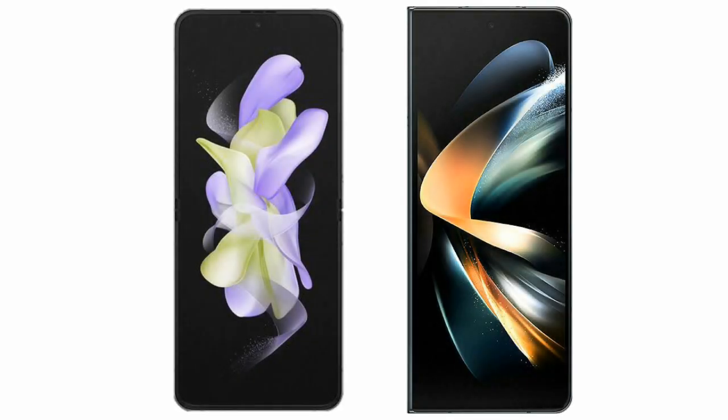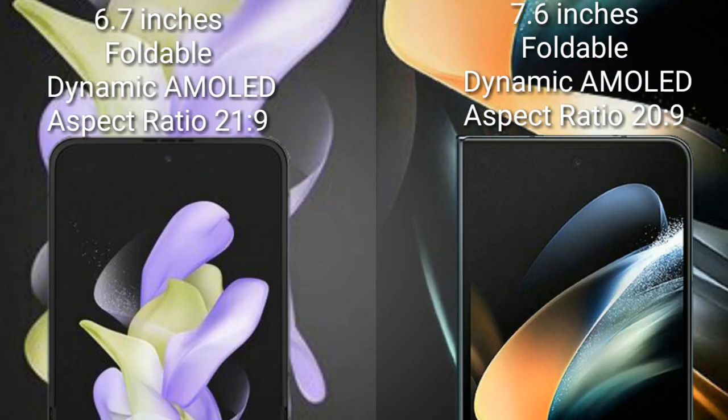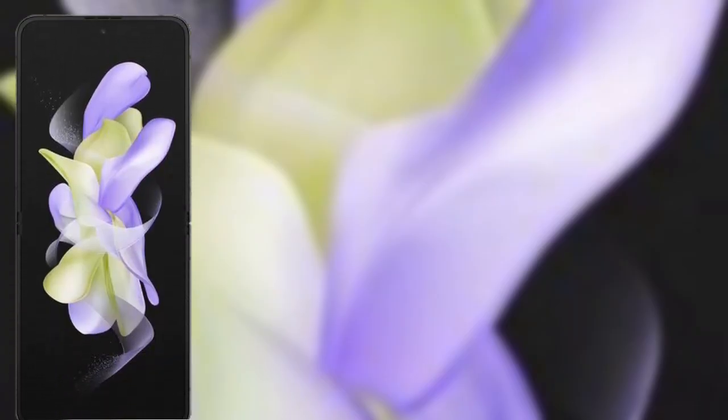I will compare the new Samsung Galaxy Z Flip 5 with Samsung Galaxy Z Fold 4. Samsung Galaxy Z Flip 5 comes with a 6.7-inch Full HD Dynamic AMOLED display and aspect ratio 21:9. Samsung Galaxy Z Fold 4 has a 7.6-inch Full HD Dynamic AMOLED display and aspect ratio 20:9.